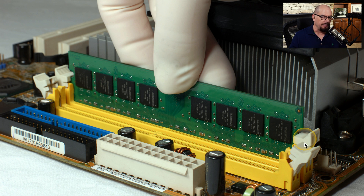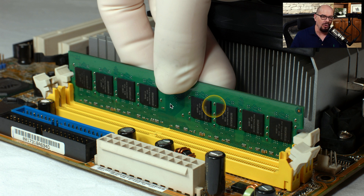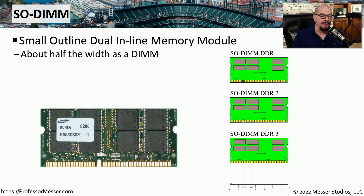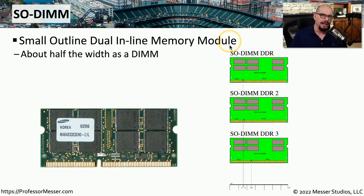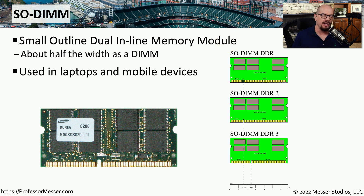Here's an installation of a DIMM onto memory slots on a motherboard. To install the memory, you push it lightly into the slot, and there are clips on the ends that hold the memory in place so it can't accidentally be removed. If you're using a laptop, you're probably not using a full-size DIMM. Instead, you're using a SO-DIMM — Small Outline Dual Inline Memory Module — which is about half the width of a normal DIMM.